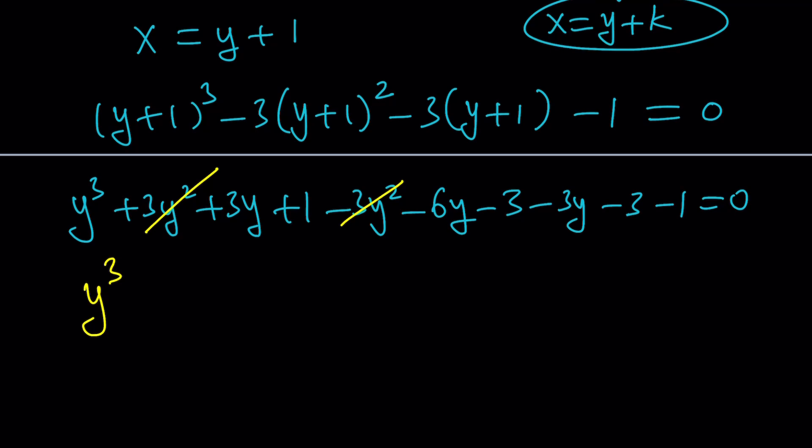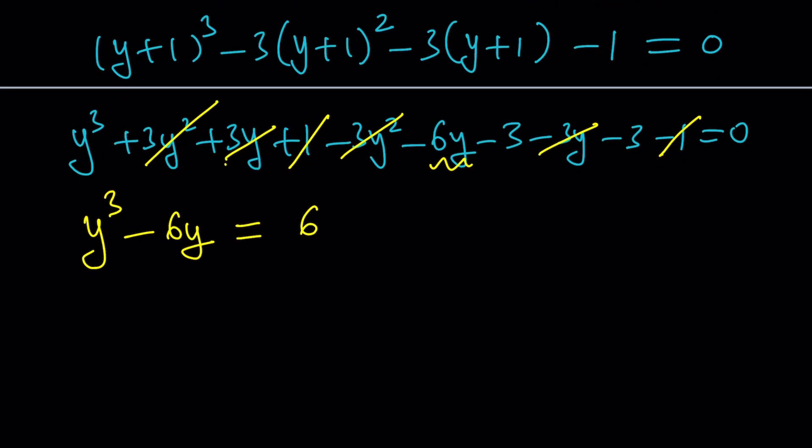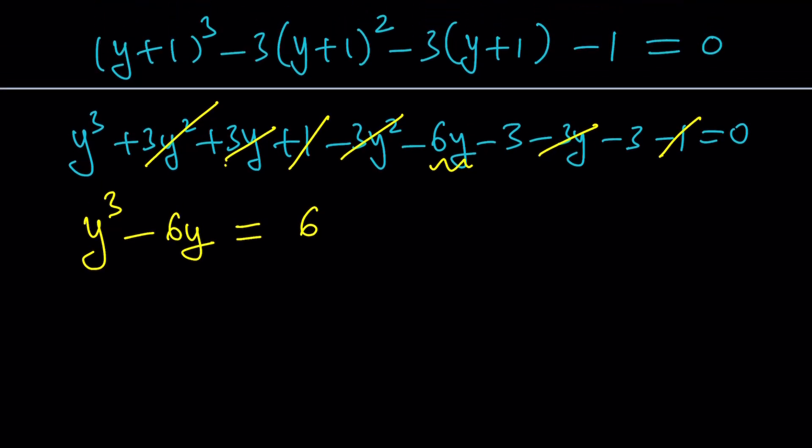And now we have a depressed cubic, but in terms of y, but no problem, because we can always go back and find the x from here. y cubed. Now, let's collect these. 3y and negative 3y also cancel out, leaving us with minus 6y. And now let's take a look at the constants. 1 and negative 1 also cancel out. We have negative 3 minus 3, which is negative 6. But guess what? We want to have that on the right-hand side. Because with the cubic formula, as you're going to see in a little bit, we do have an identity, and the constant needs to be on the right-hand side. I mean, it doesn't have to be, but that's how I usually use it.